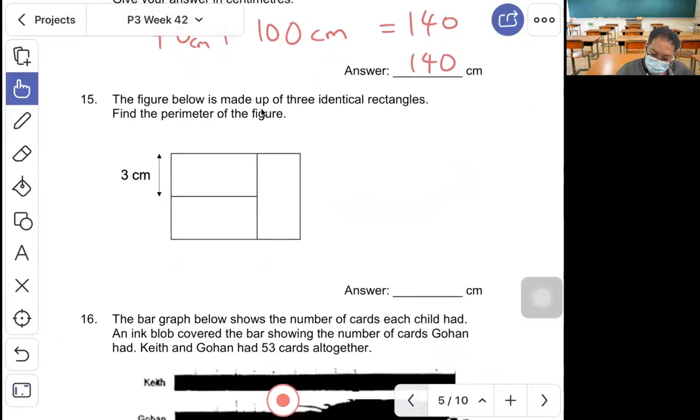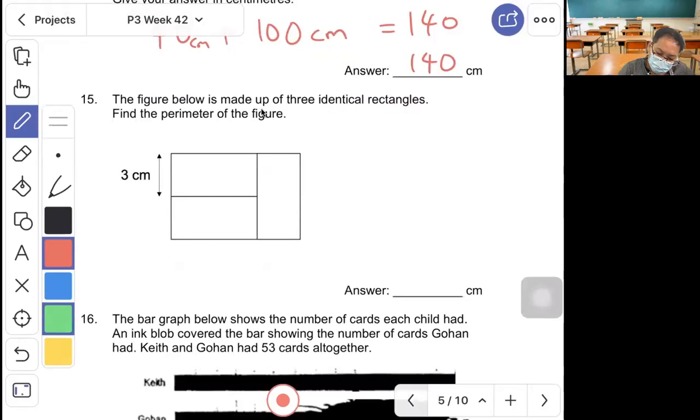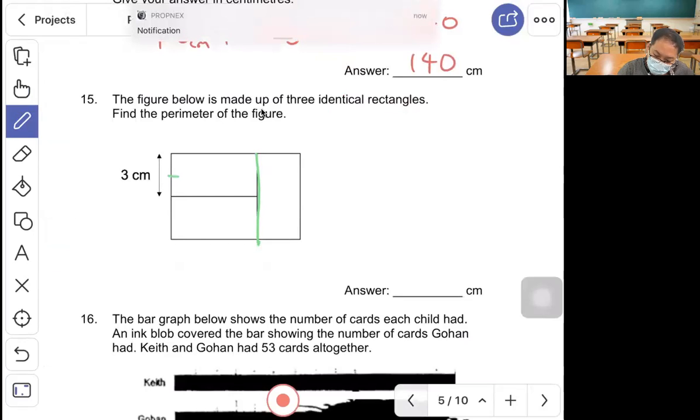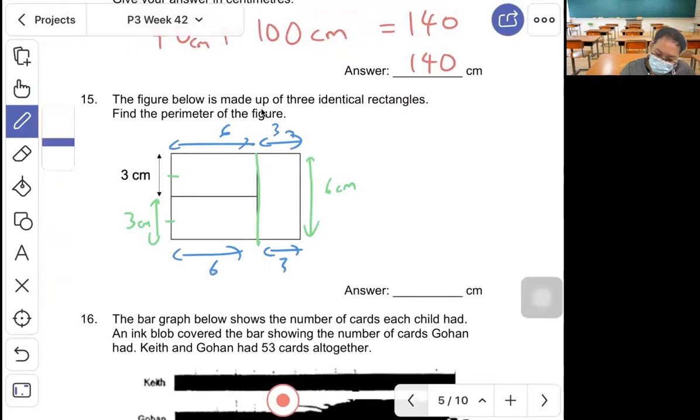Question 15, the figure below is made of three identical triangles. Find the perimeter of the figure. The length is made of 3 cm plus 3 cm, so that will be 6 cm. Since this is 6 cm, this will be 6, 3, 3, 6. Add all together: 6 plus 3 plus 6 plus 6 plus 6 plus 3 plus 6 equals 30. Answer is 30 cm.